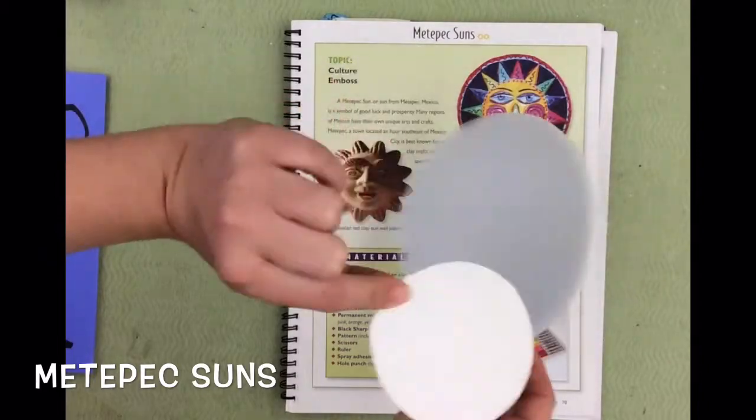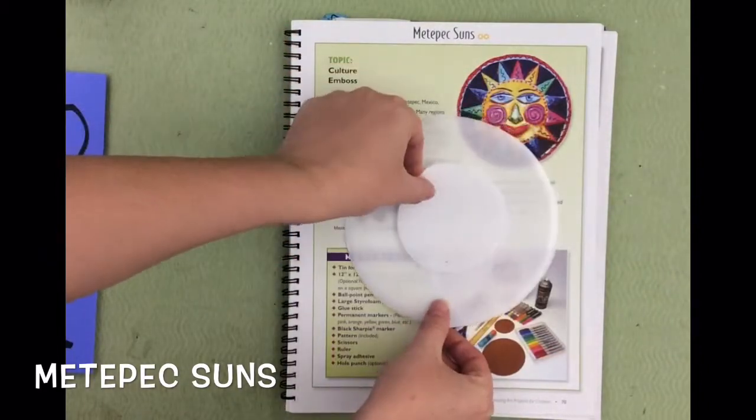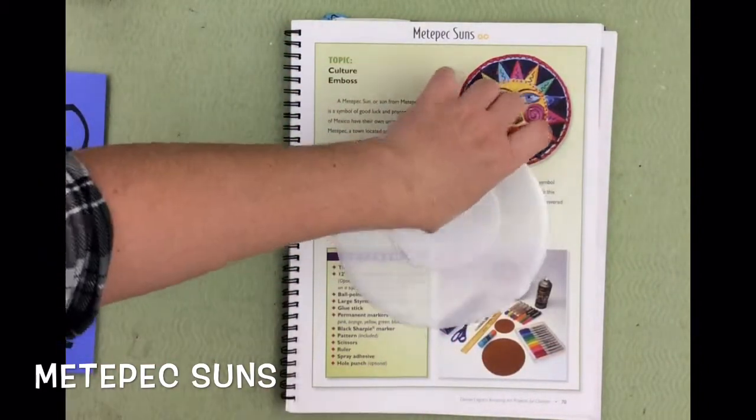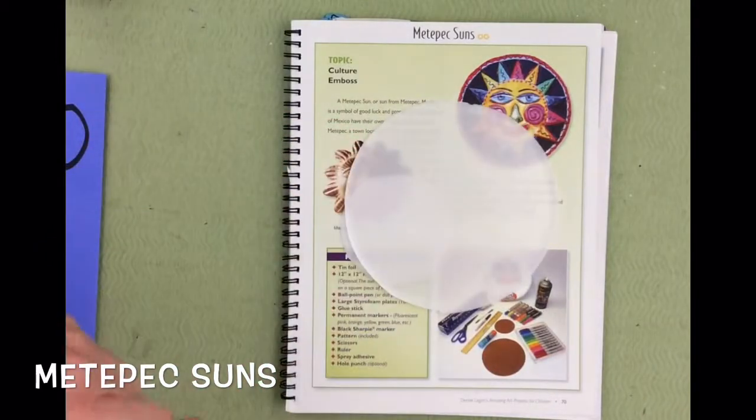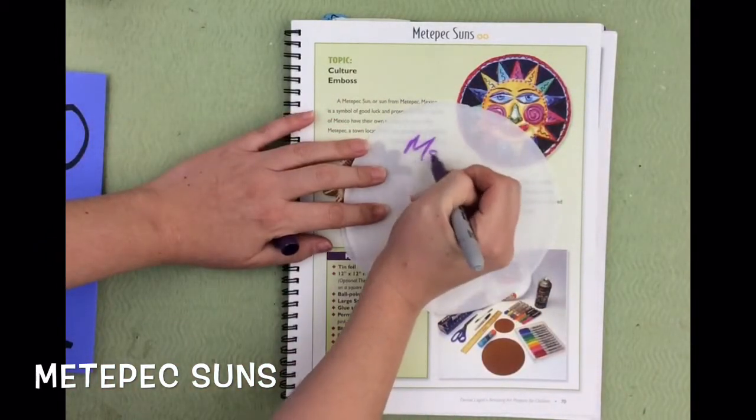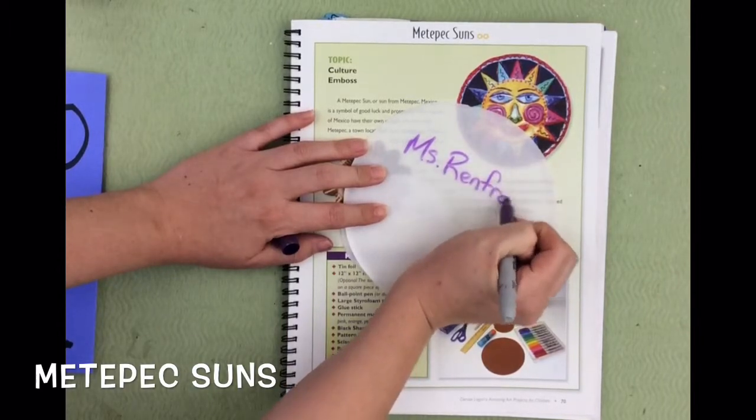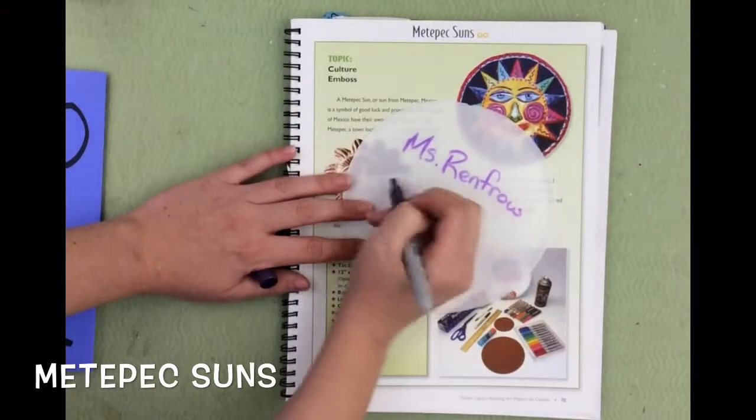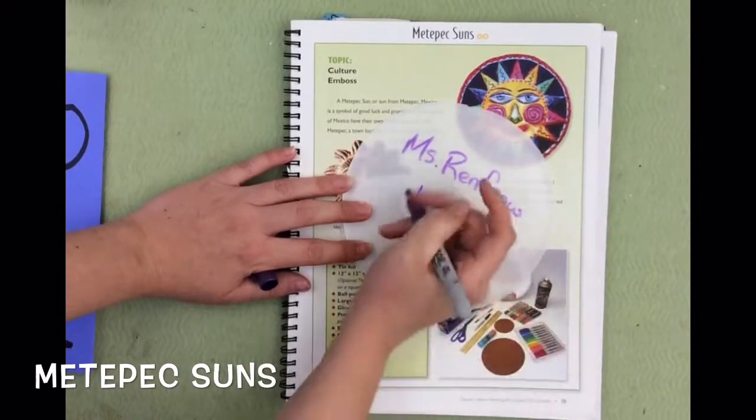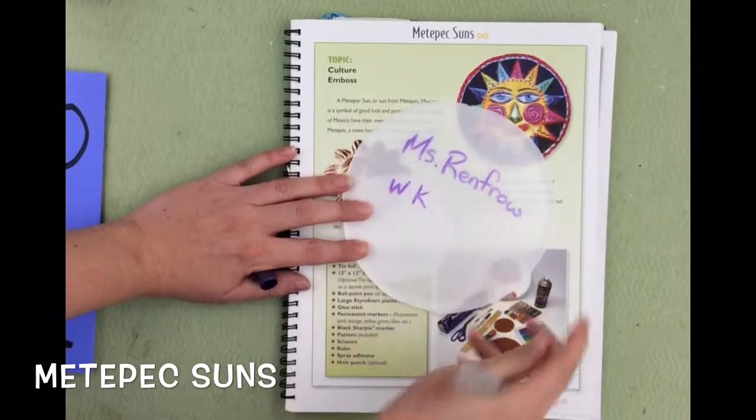The first thing that we're going to do is get our two styrofoam circles that I've already cut out for you. Then we're going to flip them over and write our name and code on the back. This is very important. Do not forget to write your name and your code on the back. I'm going to write K and then maybe a W for Ms. Wardley.